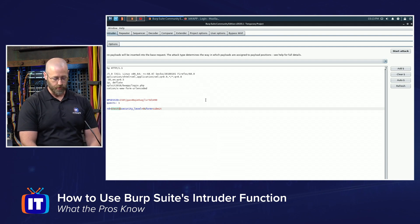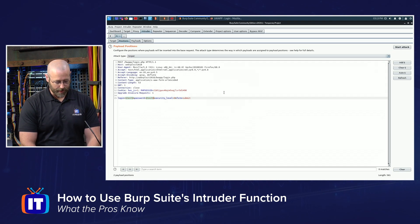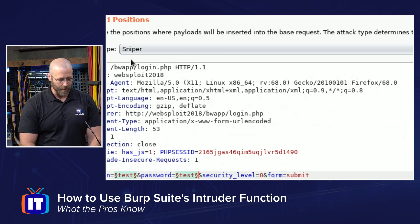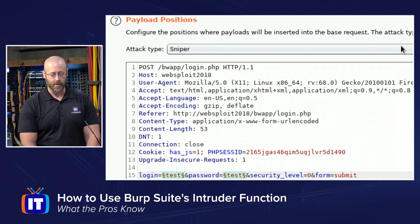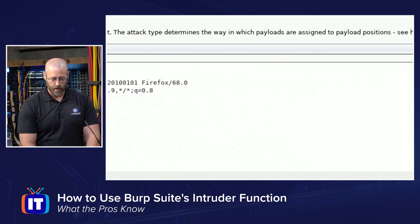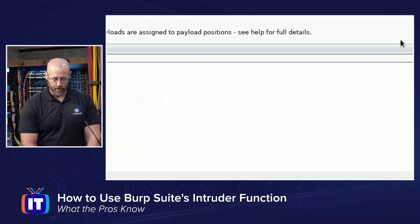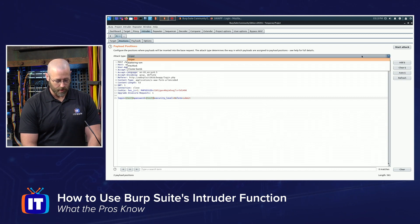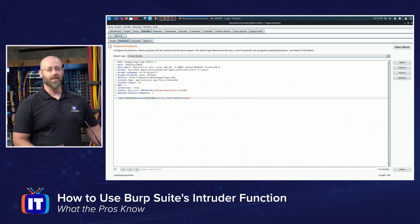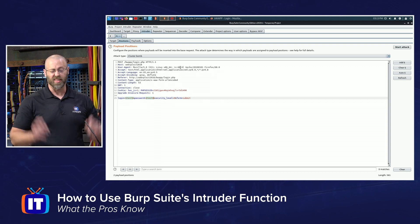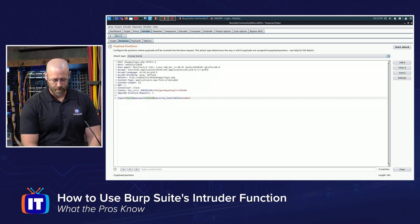Now I've added my two fields. The next thing I'm going to do is go to the attack type up here at the top. By default it's set to Sniper. I'll hit the drop-down and go to Cluster Bomb, because I have multiple different areas in which I want to fuzz out.